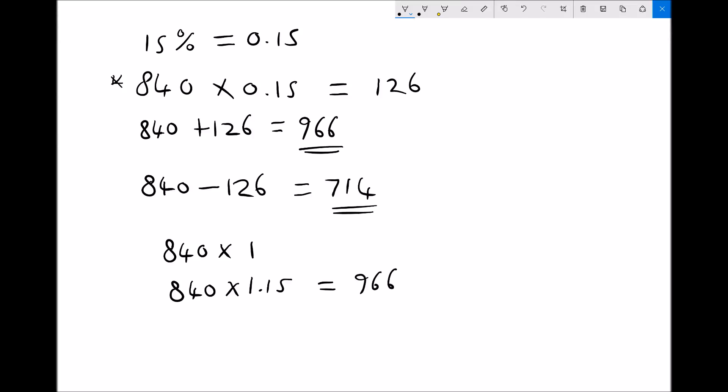This also works in reverse. For a 15% reduction, we're finding 85% of the original amount. 85% as a decimal is 0.85. So 840 times 0.85 gives us 714 — the same answer as before but calculated differently. We can either find 115% of the original, or find 15% and add it to 100%.